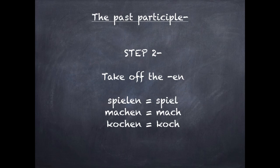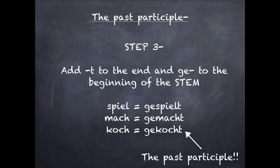Second step: we take off the -en. We do this sometimes in the present tense as well, where we find the stem of the verb. So we've taken off the -en to get: spiel, mach, and koch. Step three: we now need to add -t to the end and ge- to the beginning of the stem. So spiel becomes gespielt, mach becomes gemacht, and koch becomes gekocht.